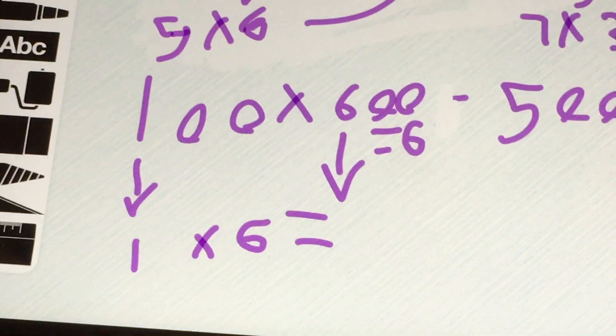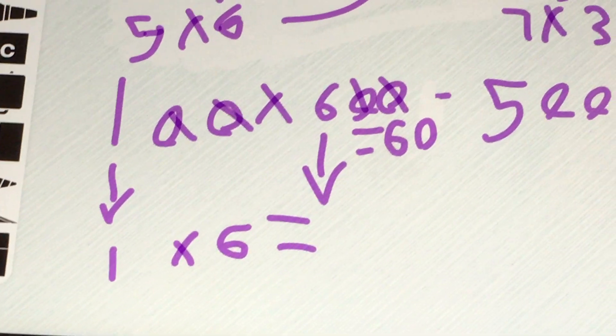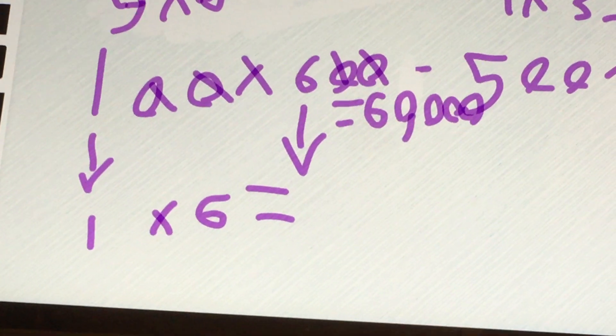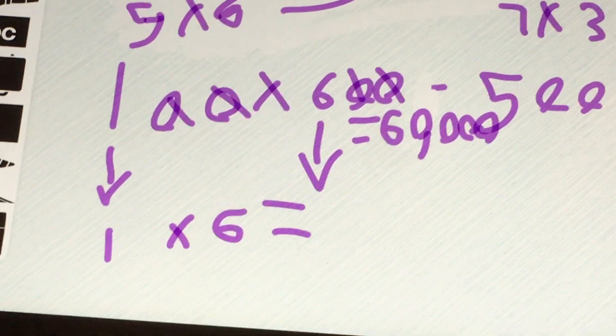So 100 times 6 equals 6. We'll put the 6 down, but there's more than one zero, so we put all those zeros down. Put the comma in the right area. It equals 60,000.